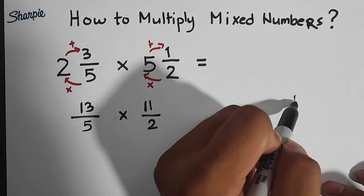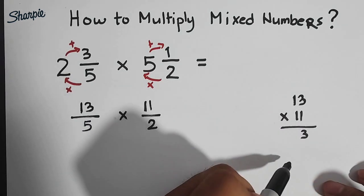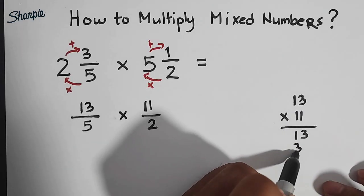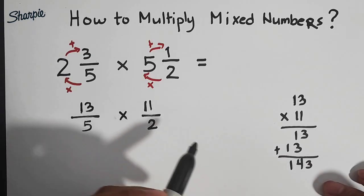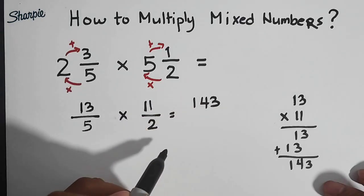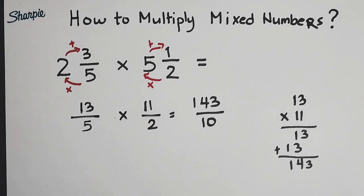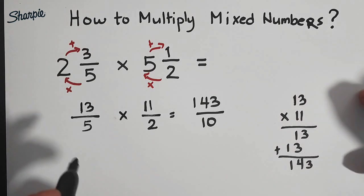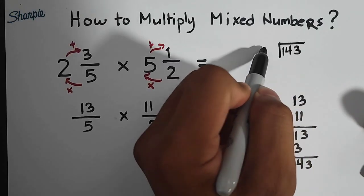So we will use this space. We have 13 times 11. 1 times 3, which is 3. 1 times 1, that is 1. 1 times 3 is 3. 1 times 1 is 1. So we will just add these numbers: 3, 4, and 1. This is 143 over 10.